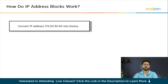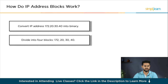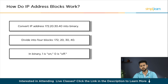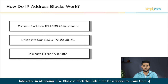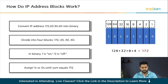To understand this, let's look at the chart. Consider the process of converting the IPv4 address 172.20.30.40 into binary. Simply divide the address into four blocks — 172, 20, 30, and 40 — and transform each block into binary, adhering to the binary conversion chart. It is essential to note that in binary, one represents on while zero represents off. To convert the first block, 172, begin at the chart's beginning and assign ones or zeros to the corresponding cells until their sum equals 172. Repeat this process for each block: 20, 30, and 40.